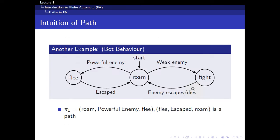Another example is if you go back to the previous bot behavior. Suppose you start at roam, you see a powerful enemy, and you start to flee. And after that as you're fleeing, if you manage to escape, it goes back to roam. So you can see that this path, path 1, consists of two transitions. This is also known as a path.